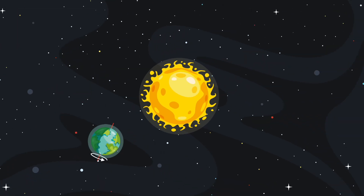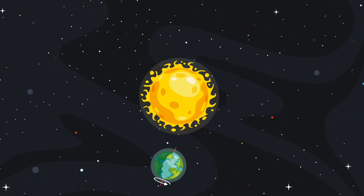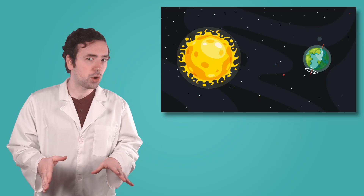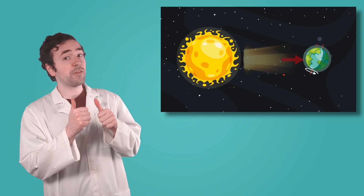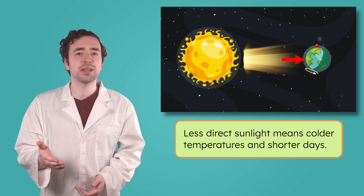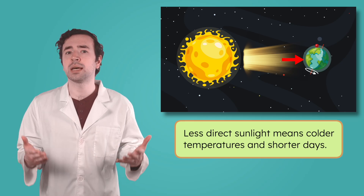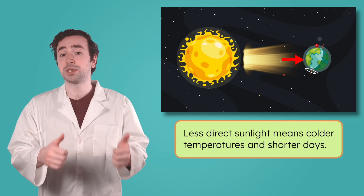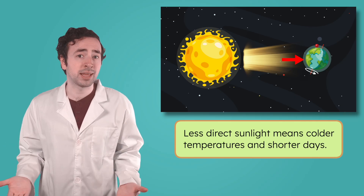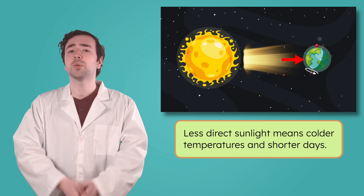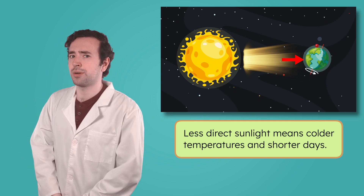Earth remains tilted as it revolves around the Sun, which is what causes the transition between seasons. When a hemisphere tilts away from the Sun, it receives indirect sunlight. Indirect sunlight is spread out, delivering less heat and making it colder. The hemisphere tilted away from the Sun also has fewer daylight hours. This hemisphere would be experiencing winter.